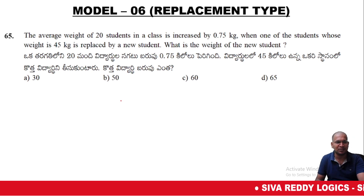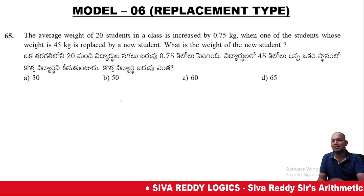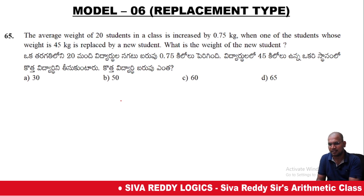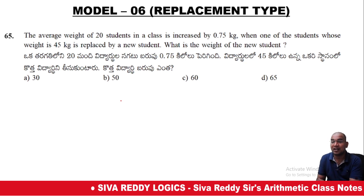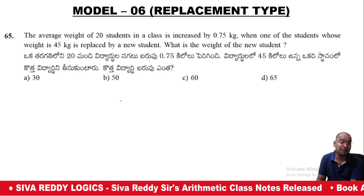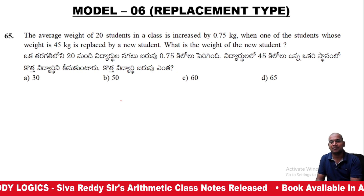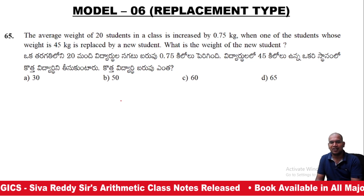First question: the average weight of 20 students in a class is increased by 0.75 kg when one student whose weight is 25 kg is replaced by a new student. What is the weight of the new student?